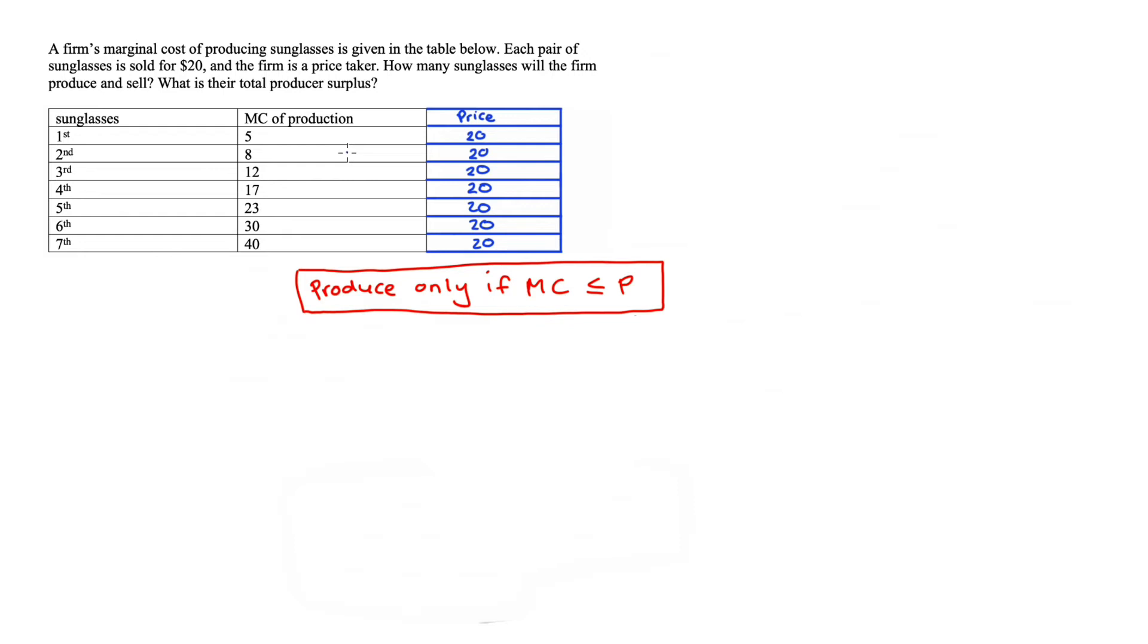The marginal cost of producing the second pair of sunglasses is also lower than the price since $8 is less than $20. This is true for the third pair as well since $12 is less than $20 and also for the fourth pair because $17 is still less than that price of $20.